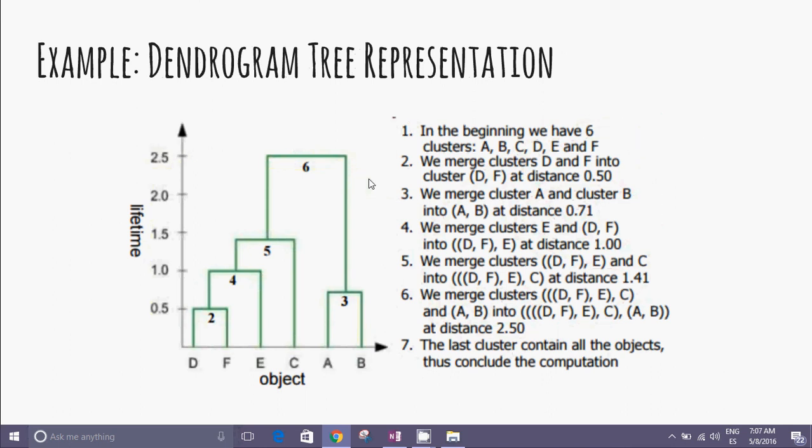The dendrogram is a tree representation of the process clustering. In abscissa we have the name of the object, in ordinate we have the lifetime or distances.